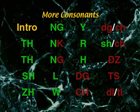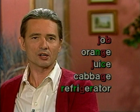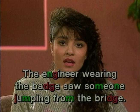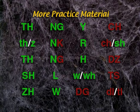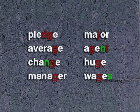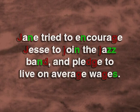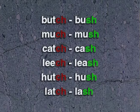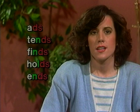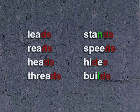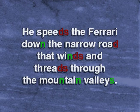More consonants menu. There are two TH's — one voiced, one unvoiced. Included on this menu are minimal pairs for J and animation for DG, operative words, words moved into sentences, more practice material. Also included are minimal pairs for TH, Z, W, WH, and CH/SH, practice material for J, words moved into sentences.